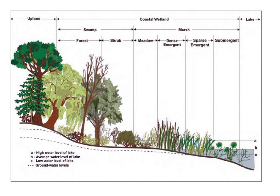A marsh is a wetland that is dominated by herbaceous rather than woody plant species. Marshes can often be found at the edges of lakes and streams, where they form a transition between the aquatic and terrestrial ecosystems. They are often dominated by grasses, rushes or reeds. If woody plants are present, they tend to be low-growing shrubs.